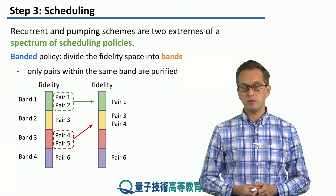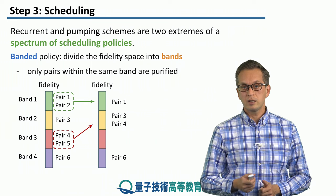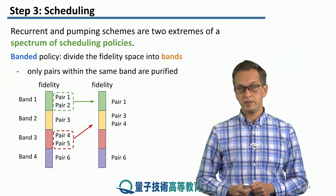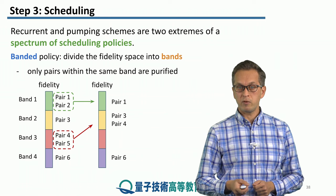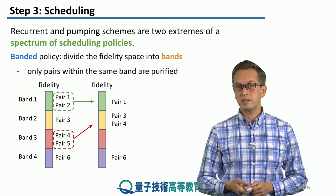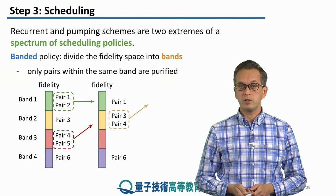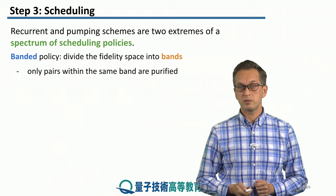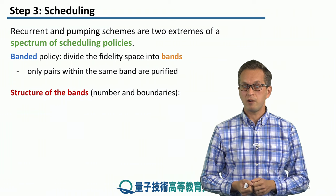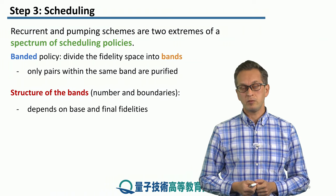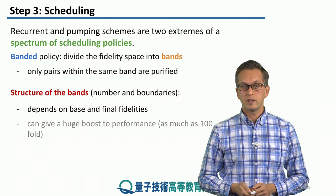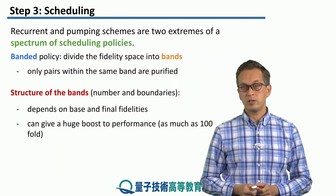A new set of Bell pairs with new fidelities is produced. Pair 1 and pair 2 started in the highest band, so they produce a Bell pair of higher fidelity but still within the same band. Let's say the original pair 4 and pair 5 managed to produce a Bell state with fidelity now in band number 2. Pair 6 remains the same because we haven't touched it. So in the next round you can take pair 3 and pair 4 and purify those, and that's how you keep going. The structure of the bands — how many there are and where their boundaries lie — has a very big effect on overall purification. If you choose it carefully, you can gain a huge boost in performance, as much as 100-fold.